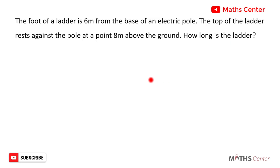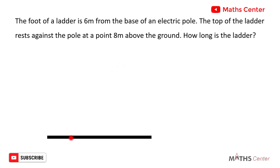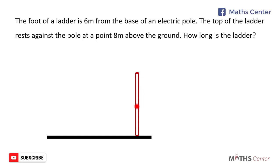Let's draw a simple diagram to illustrate this. We have a ladder and a pole. Obviously the pole will be on the ground and the foot of the ladder will also be on the ground. So let's assume that this is the ground. We have a pole on the ground, and we represent the pole by this. Then we have a ladder that rests against the pole, so the top of the ladder is on the pole and the foot is on the ground.